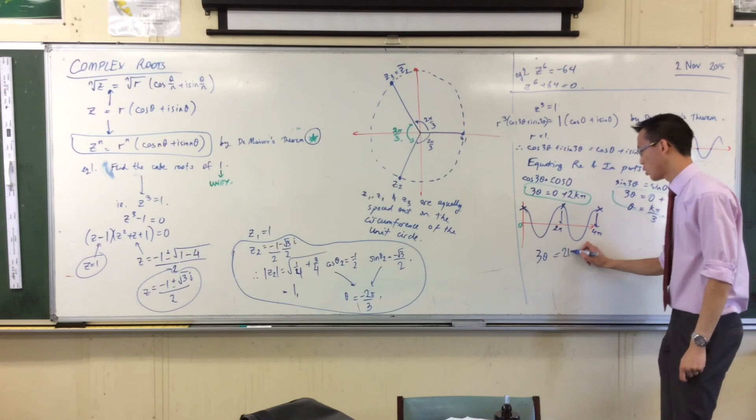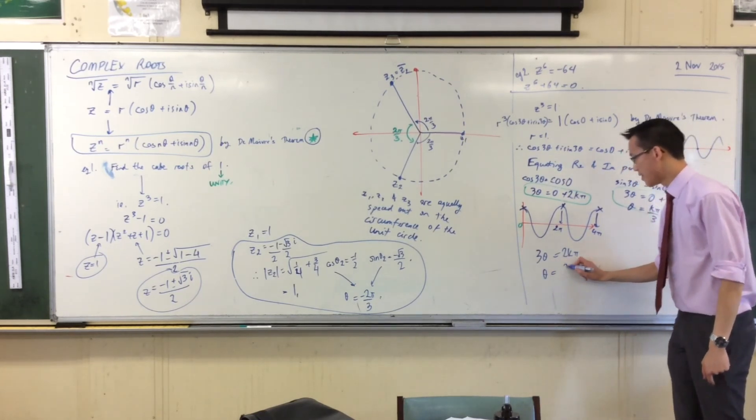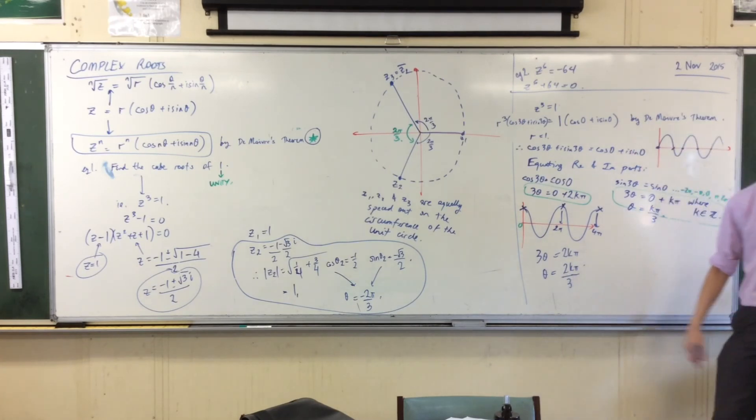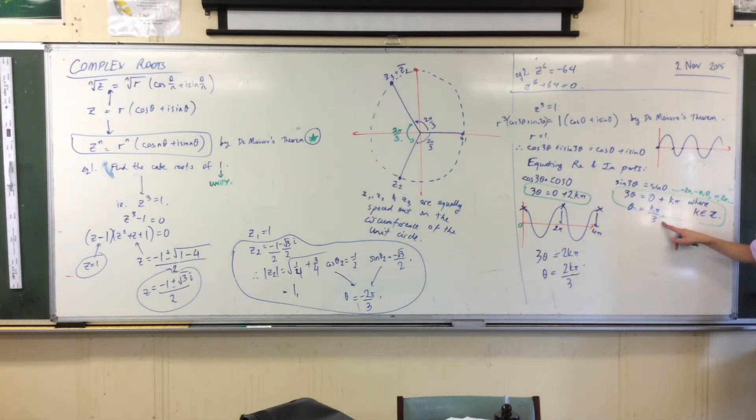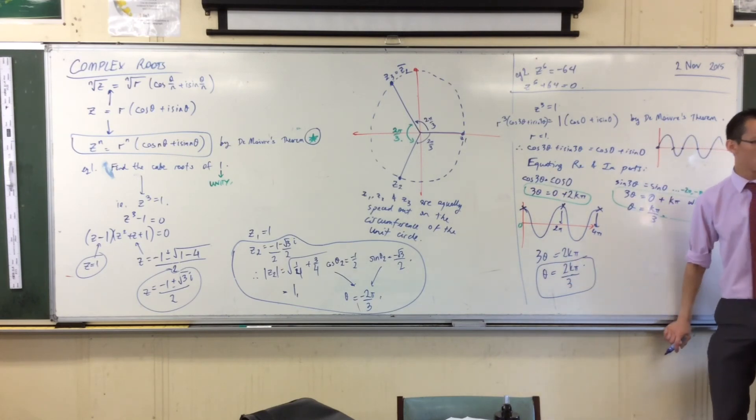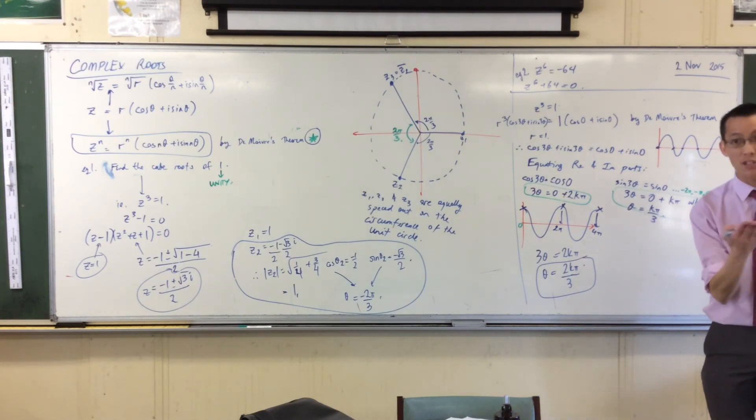So now I'm going to solve this. 3θ = 2k·π, so θ = 2k·π/3. This is again another general solution giving me all the versions of theta that I want. I know the modulus, I know the argument, now I'm ready to actually state my solutions.